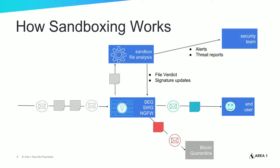With most sandbox solutions, if a file is judged to be malicious, the security team is alerted and a report is generated that details the malicious behavior of the file. The report includes information such as how the malware interacts with the sandbox host system and how it attempts to communicate with other devices or websites. The threat information is useful for the security team to track down and remove malicious files if they were delivered, clean affected systems, and update legacy security infrastructure such as firewalls, web proxies, and secure email gateways with threat intelligence to protect against follow-on attacks.